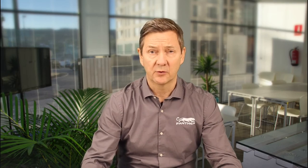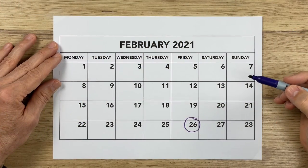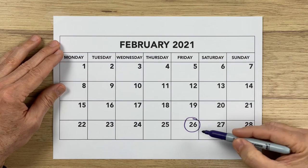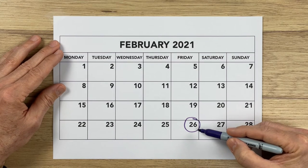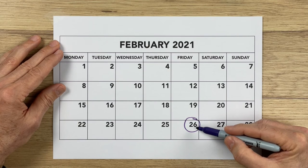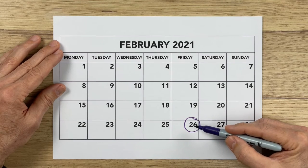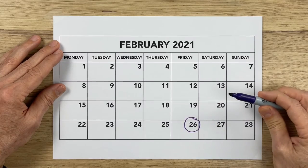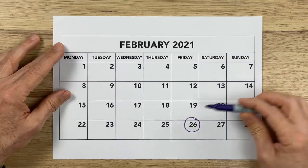Now let's talk about timing. When people come to us for an order of service, they've usually got the funeral date in their diary already booked. So on this occasion, let's assume the funeral is on the 26th February. When do we start composing the order of service? Ideally we'd be looking at the previous week.